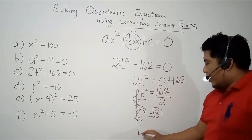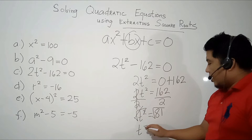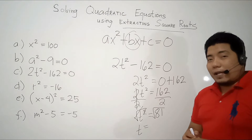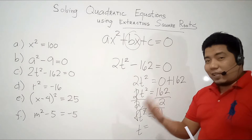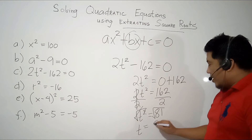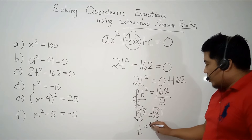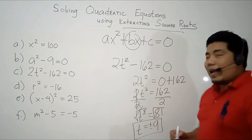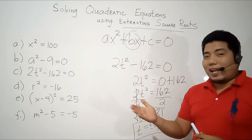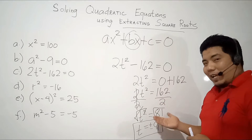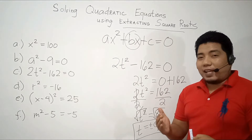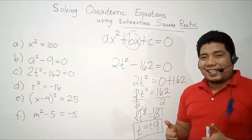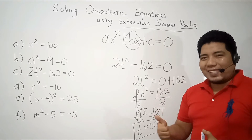The squared cancels out, giving us t on the left. For the right side, what number multiplied by itself equals 81? That is 9. We consider positive and negative, so t = ±9. That is our final answer, because 9 × 9 = 81 and negative 9 × negative 9 = 81.